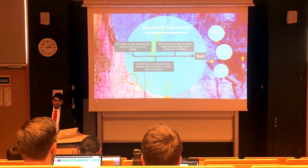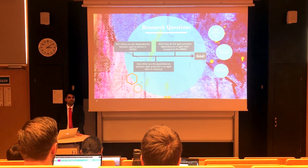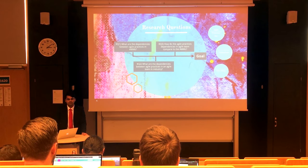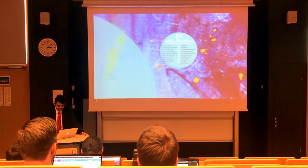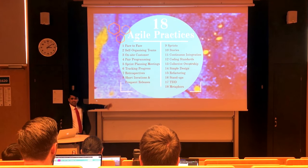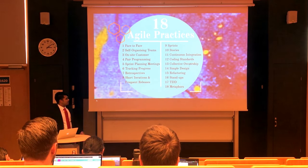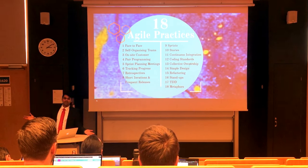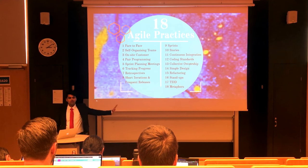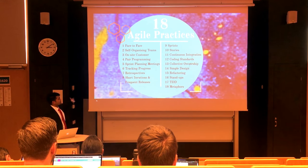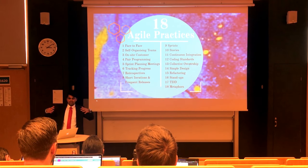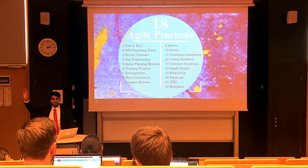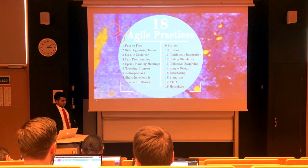How do I begin? There was research stating there are about 62 agile practices. I can't hold all of them, so I needed a starting point. I began by choosing 18 agile practices — generally the most popular ones. For example, face-to-face means the team is co-located, not sitting in cubicles or their own offices, but sitting together. Self-organizing teams means the team makes local decisions rather than waiting for top management. That way, we have about 18 practices.